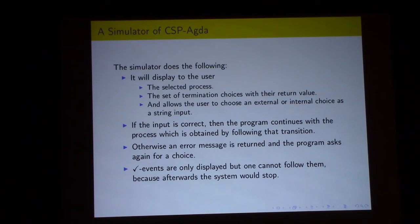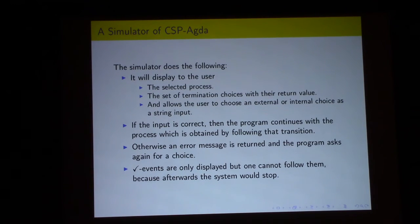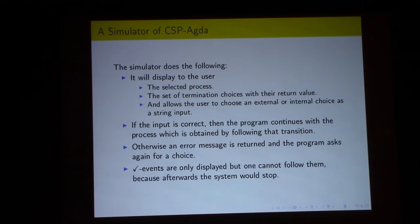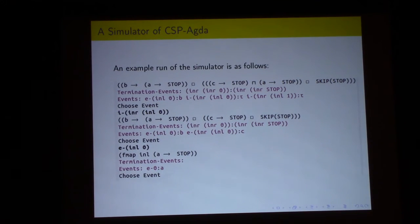The simulator procedure works as follows: it displays the selected process and the set of termination choices with return values, and allows the user to pick one of the external or internal choices as a string input. If the input is correct, the program continues with the process following the next transition. Otherwise an error message is issued asking the user to enter the correct one. The tick or termination events are only displayed but cannot be followed since the process would afterwards be stopped and stuck.